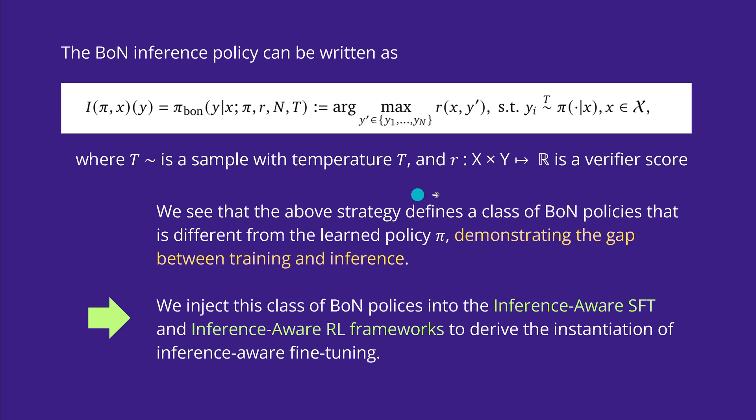The above strategy defines a class of best of N policy that is different from the purely learned policy pi in our LLM training, demonstrating the gap between the training procedures and the inference procedures. This is not good because we lose performance if we have a non-coherent training and inference policy.